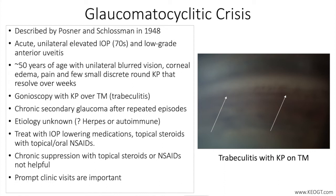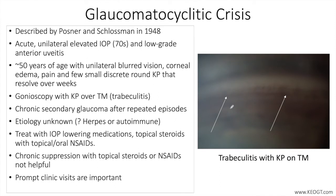The iris may become ischemic due to extreme IOP elevation and the pupil may be mid-dilated. The conjunctiva is often unremarkable. Gonioscopy reveals normal angle anatomy except for sparse inflammatory debris. Keratic precipitates can be identified over the trabecular meshwork, and you can see here in this gonioscopic photo of the angle fine keratic precipitates overlying the trabecular meshwork, indicative of a trabeculitis process.